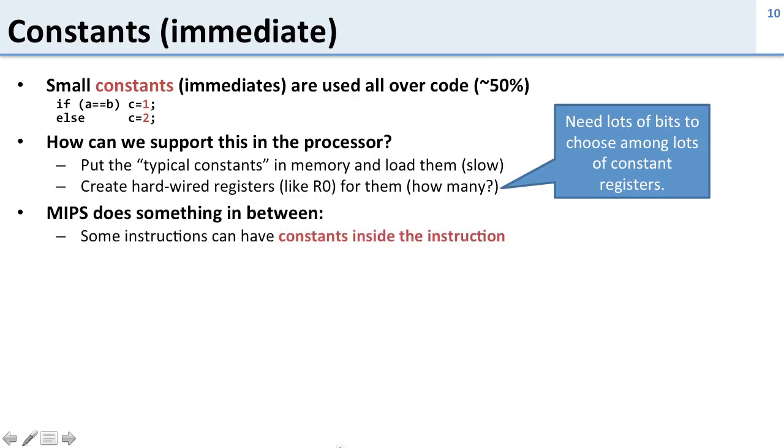So what MIPS does is something in between. Some of the instructions can have constants inside the instruction, and you've already seen this with the add I instruction and the branch not equal instructions. What happens then is the control logic sends the constant from the instruction to the ALU.